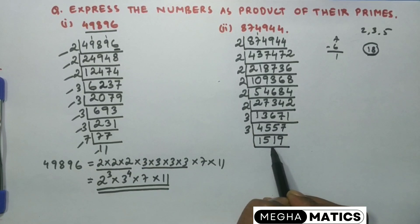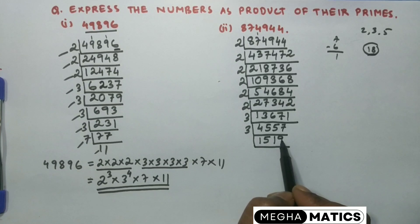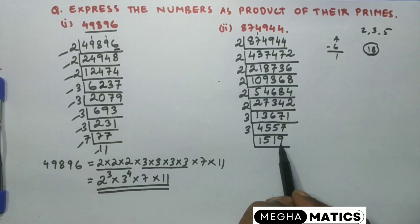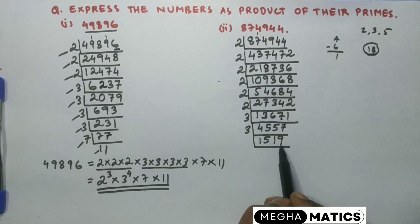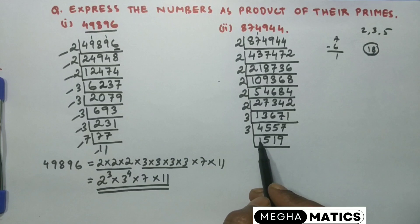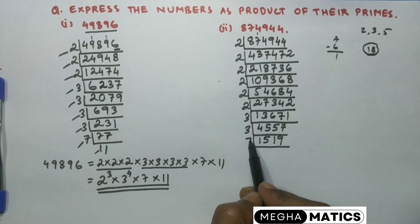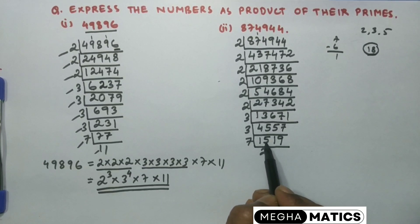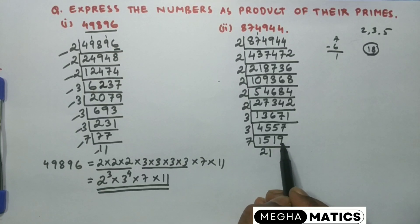We check if it's divisible by 3 again: 5 and 1 is 6, 6 and 1 is 7, 7 and 9 is 16 — since 16 is not divisible by 3, 1,519 is not divisible by 3. We try 5 — since the unit digit is 9, not divisible by 5 (only divisible by 5 if the unit digit is 0 or 5). We try 7: dividing gives 14, then 11, and 7 goes 1 time, so 11 minus 7 is 4, giving 49 — 49 divided by 7 gives 7 times.